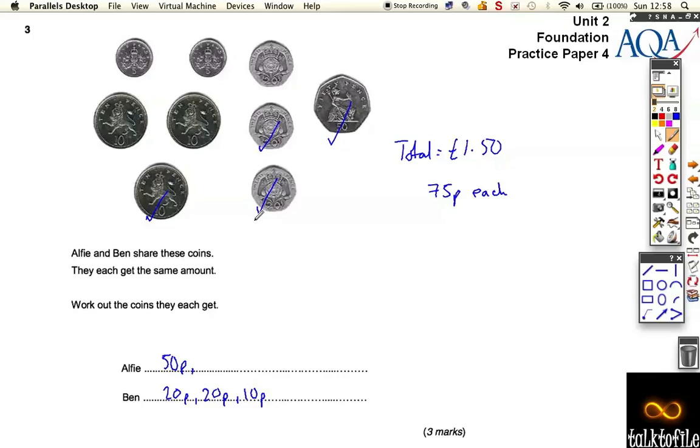Now, if Alfie gets a 20p, that puts him on 70p. To give the same amount, Ben's got to take two 10ps. So he's got to take a 10p and another 10p.